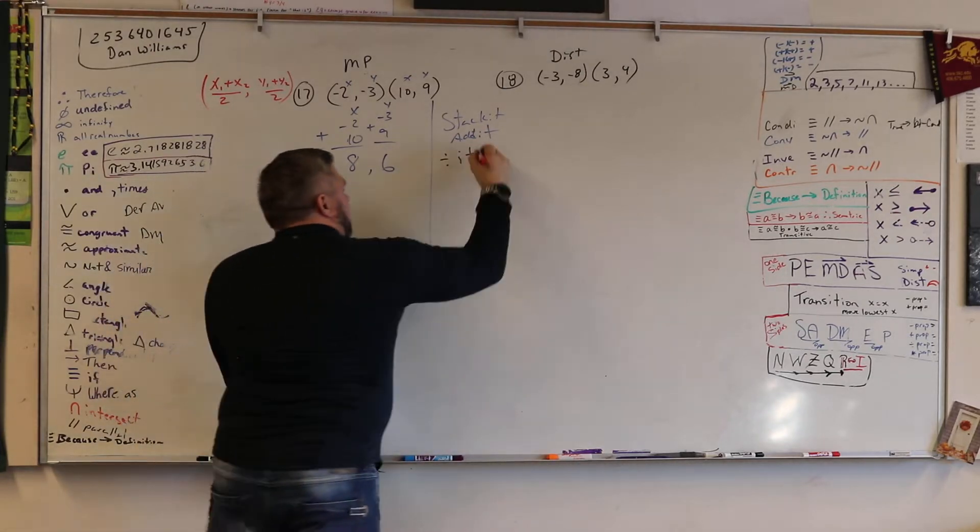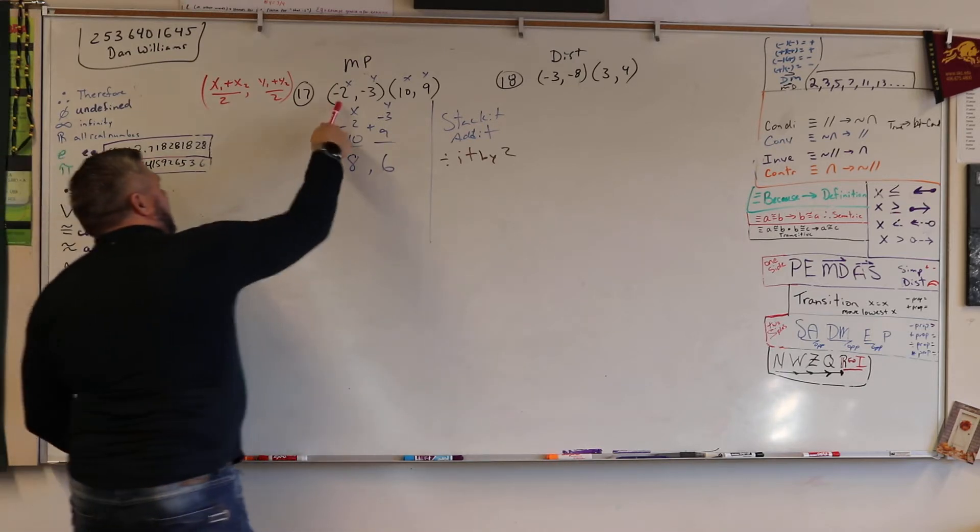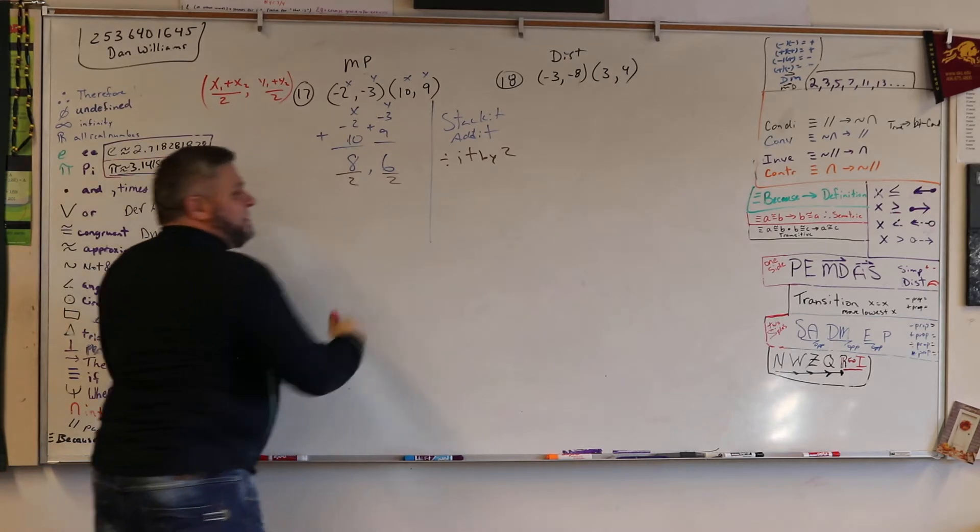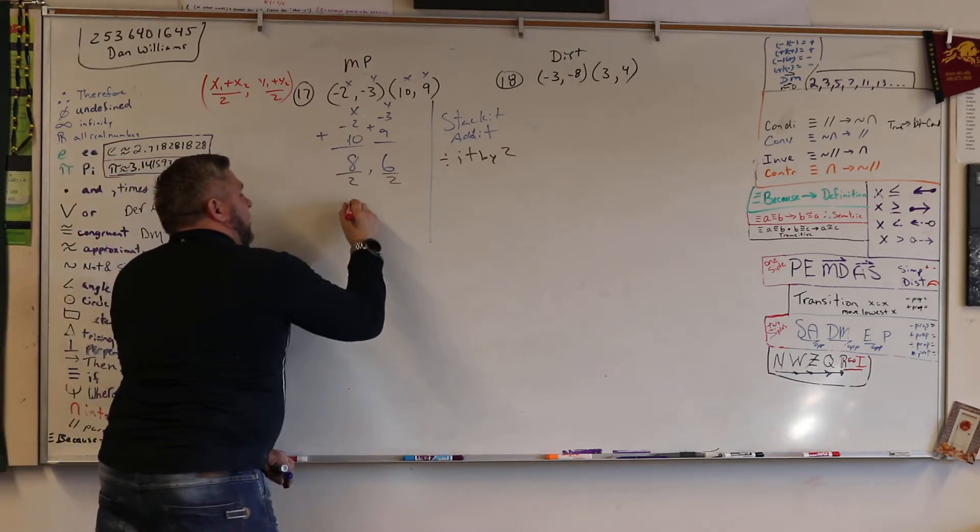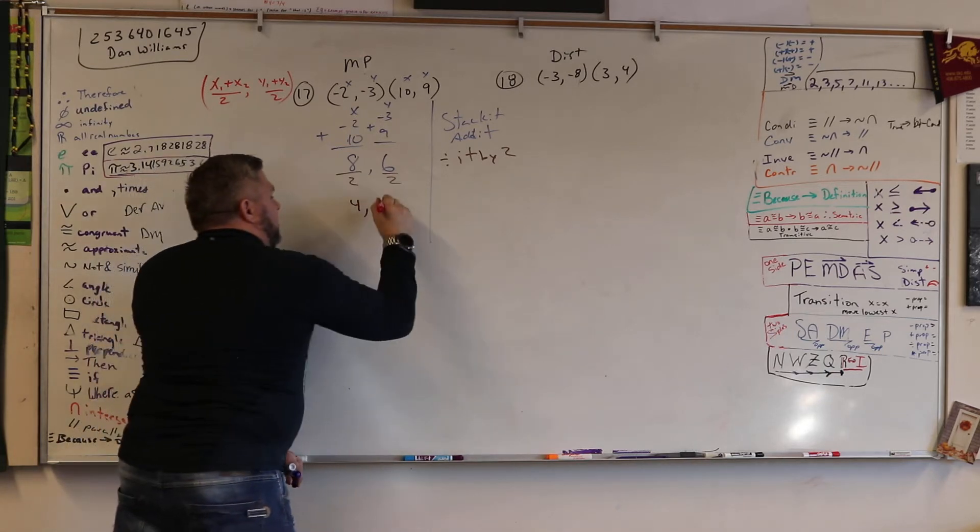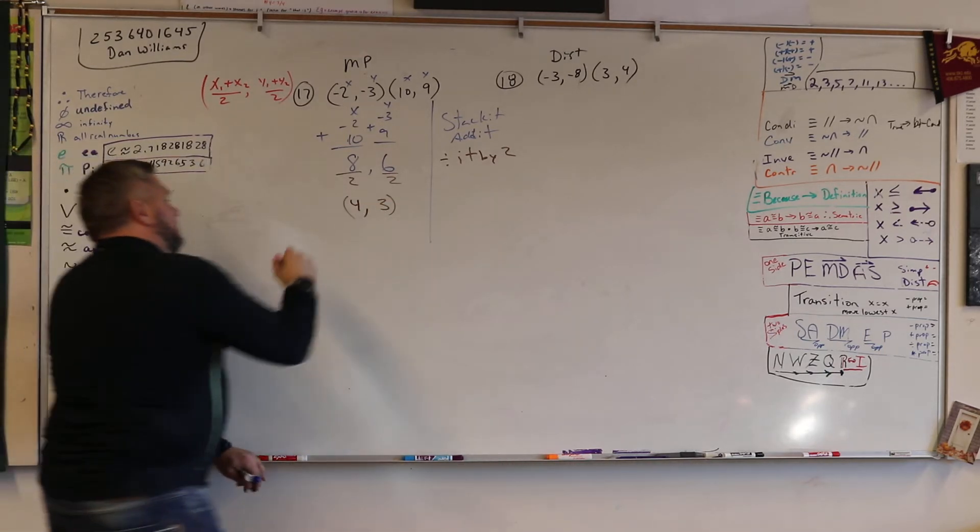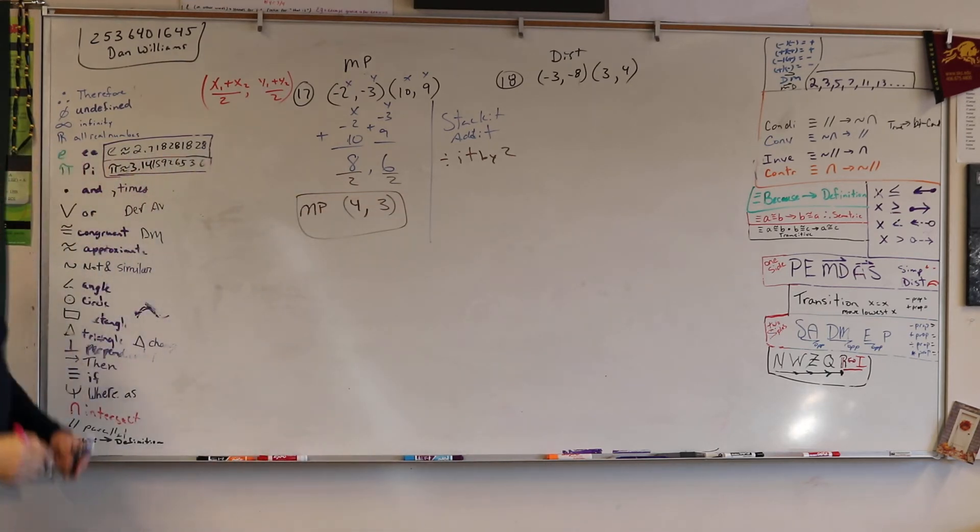Divide it by what? No, there's two. There's two X's, so we're going to divide it by 2. Oh, goodness. Okay. So I got what? What's 8 divided by 2? 4. What's 6 divided by 2? 3. So my midpoint is 4 and 3.